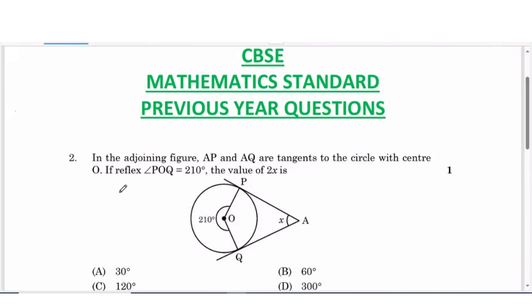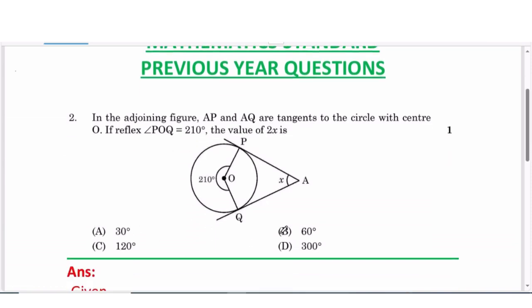Here the next question is: In the adjoining figure, AP and AQ are tangents to the circle with center O. If reflex angle POQ equals 210 degrees, the value of 2x is: Option A is 30 degrees, Option B is 60 degrees, Option C is 120 degrees, and Option D is 300 degrees. Let us find the answer.